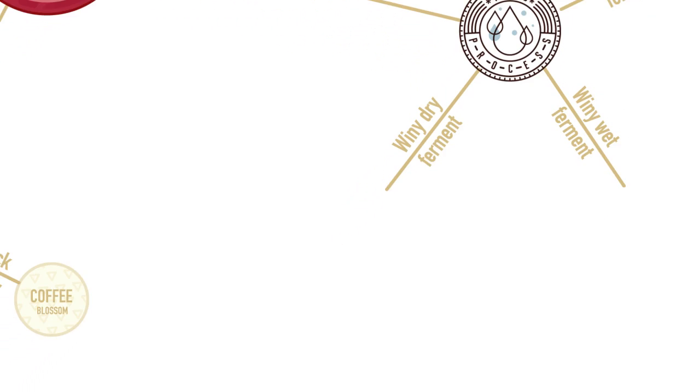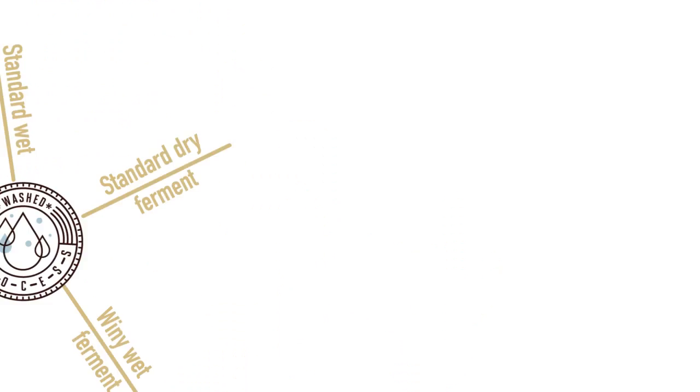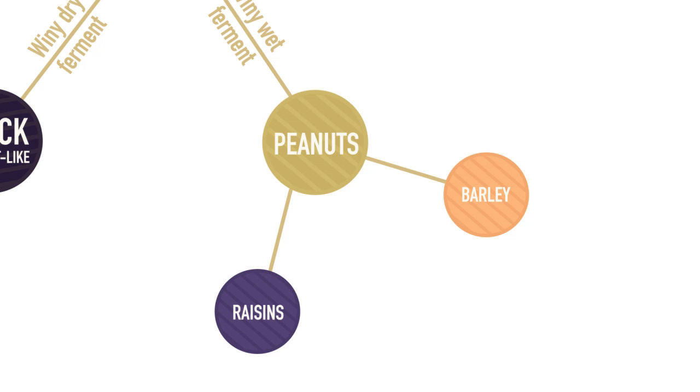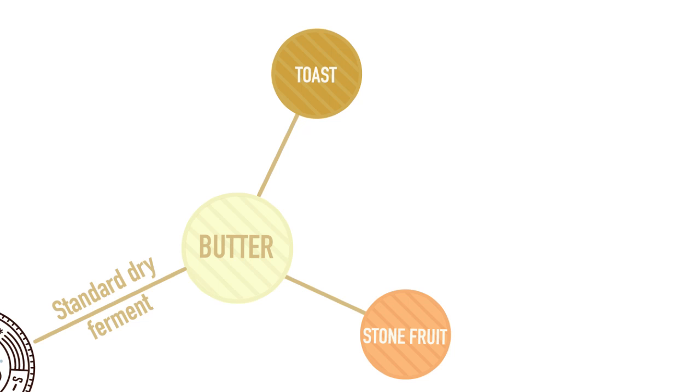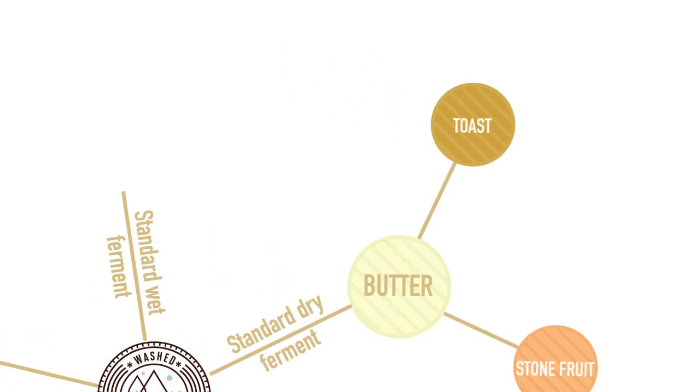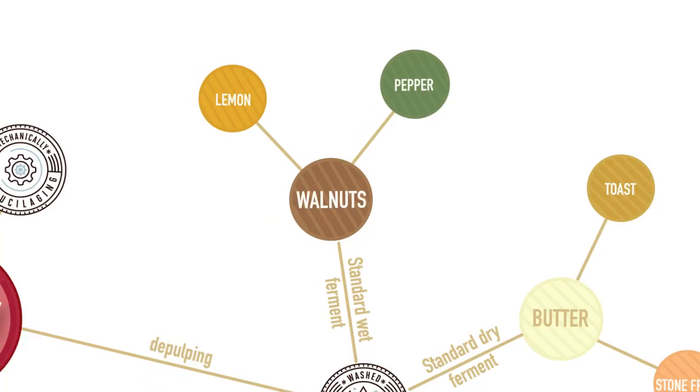The standard dry ferment had kind of a mix of sugar browning and fruity flavors: butter, toast, stone fruit. The standard wet ferment had more walnuts, lemon, and some spiciness, and there was pepper. These are your three standard processing methods, but there are some oddballs that don't really fit into any of these.